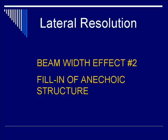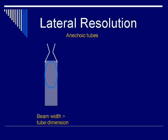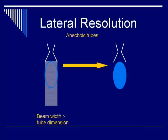The second beam effect to remember is fill-in of an anechoic structure. Anechoic structures could be a cyst — such as a cyst in the liver. However, if the dimension of the cyst is less than the beam width, such that from edge to edge it cannot be resolved in the lateral direction, what we'll have on the ultrasound screen is that the anechoic structure — which is dark within a cystic boundary — will appear as filled in because of the lack of lateral resolution. Hence, fill-in defect. The signal within the cystic structure, originally anechoic or black, will become hyperechoic, which is equivalent to fill-in.